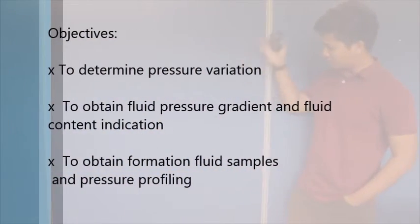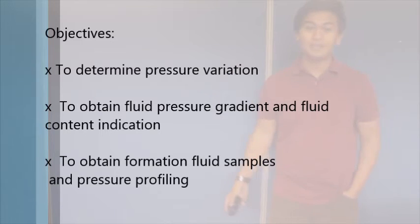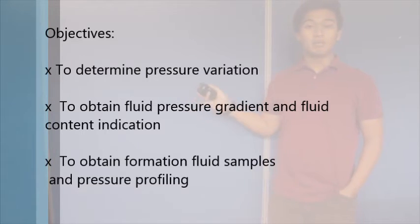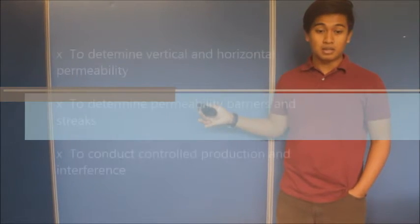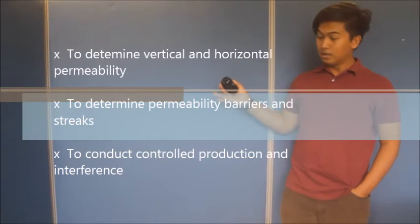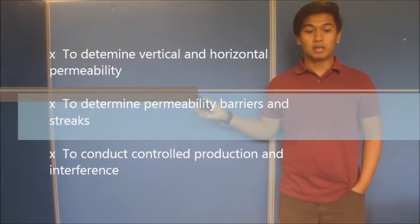The objectives of the Wireline Formation Test include: determining pressure variance among various formations; obtaining fluid pressure gradient and fluid content indication; obtaining formation fluid samples; and pressure profiling along the wellbore to determine fluid contacts — the GOC (gas-oil contact) and WOC (water-oil contact). We can also determine horizontal and vertical permeability and their distribution along the formation, identify permeability barriers and high permeability streaks, and monitor local production and vertical interference at distinct points along the wellbore.